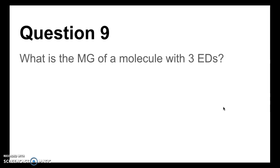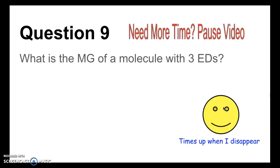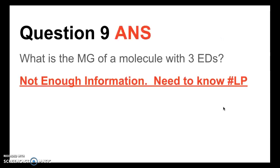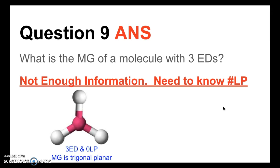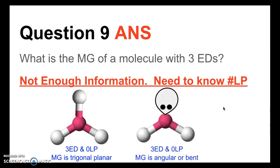Two more questions. Question 9: What is the molecular geometry of a molecule with three electron domains? The answer is: not enough information. This was a bit of a trick question. In order to figure out the molecular geometry, you need to know the number of lone pairs. If you have three electron domains and zero lone pairs, the molecular geometry will be trigonal planar. However, if you have three electron domains and one lone pair, the molecular geometry will be angular or bent.